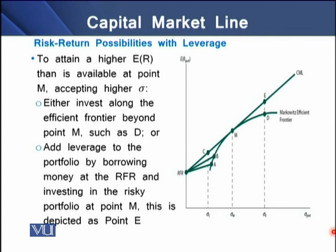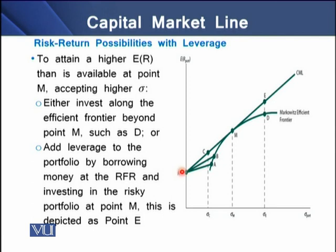What happens if we introduce leverage into the investment? To attain a higher expected rate of return than what is available at market portfolio M—while accepting higher riskiness—an investor can either invest along the efficient frontier beyond point M, reaching point D, or add leverage by borrowing funds at the risk-free rate and investing in the risky portfolio M, depicted at point E. Through leverage, we extend the expected rate of return at the cost of higher standard deviation.